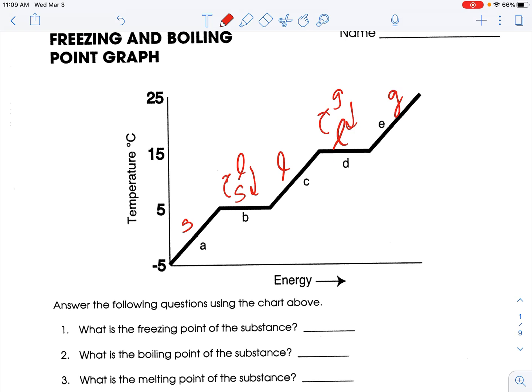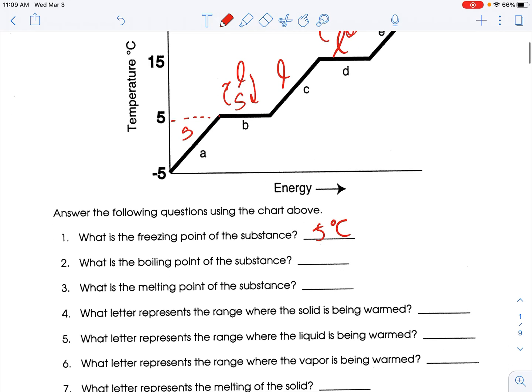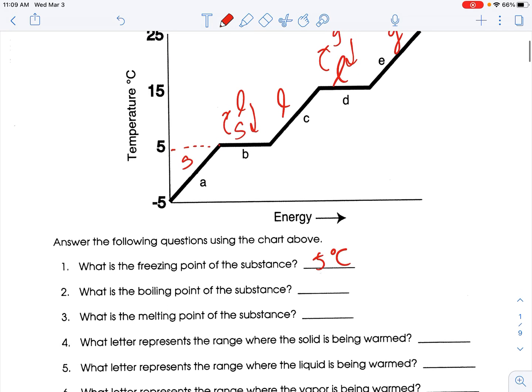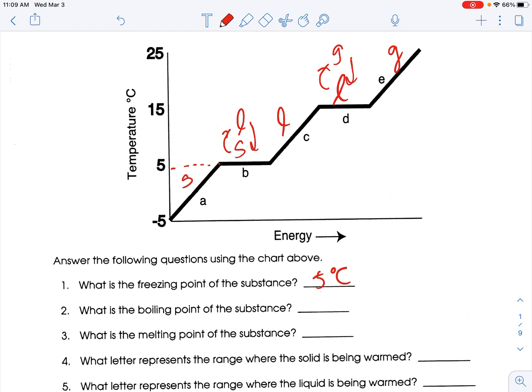Freezing is when a liquid goes to a solid, so here it is. This is 5 degrees Celsius. What is the boiling point of the substance? Boiling is when a liquid goes to a gas, so here it is, 15 degrees Celsius. Melting is when a solid goes to a liquid. A solid goes to a liquid here, so that's again 5 degrees Celsius.